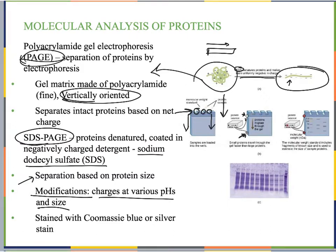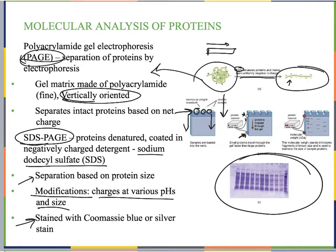Once proteins have moved through the polyacrylamide gel, they're stained with Coomassie blue or a silver stain to visualize them, similar to agarose gel. A protein ladder is applied so we can look at size or charge and compare to the ladder. We can also cut out sections or add probes, similar to what we spoke about with agarose gel electrophoresis.